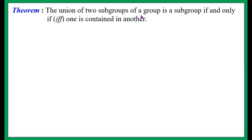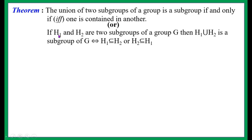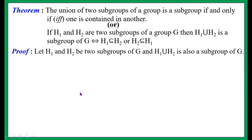Theorem: The union of two subgroups of a group is a subgroup if and only if one is contained in the other. We know that in general the union of two subgroups need not be a subgroup, but this theorem states that if H1 and H2 are two subgroups of a group G, then H1 ∪ H2 is a subgroup of G if and only if H1 ⊆ H2 or H2 ⊆ H1. Let us prove this now.